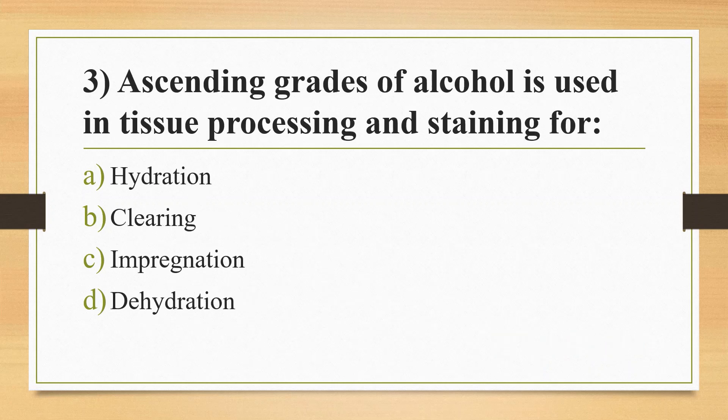Third question: Ascending rates of alcohol are used in tissue processing and staining for — Option A: Hydration. Option B: Clearing. Option C: Impregnation. Option D: Dehydration. Answer is Option D. In dehydration, ascending rates of alcohol are used. For hydration, descending rates of alcohol are used.